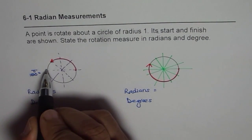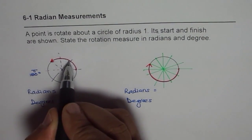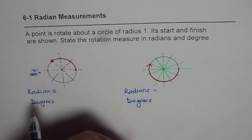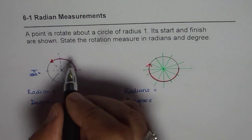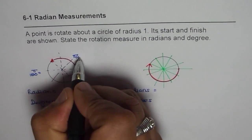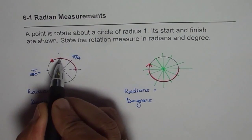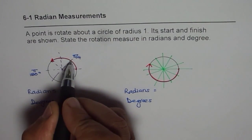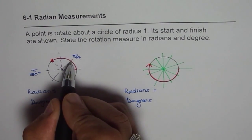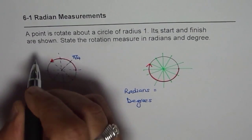And this half of the circle has been divided into 1, 2, 3, 4 parts. So each is pi by 4. Since this is pi, and pi has been divided into 4 equal parts, each is pi by 4, so we have 1 pi by 4, 2 pi by 4, 3 pi by 4.